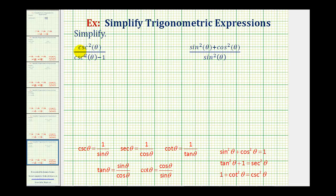Looking at this first expression, we have cosecant squared theta divided by the quantity cosecant squared theta minus one. We should be looking at this identity here. Notice the numerator is cosecant squared theta, which means we could substitute one plus cotangent squared theta for cosecant squared theta. But that would give us a sum in the numerator and a difference in the denominator, which should be even more involved to simplify. So let's take a look at our denominator — cosecant squared theta minus one. Notice if we subtracted one on both sides, we would have cotangent squared theta equals cosecant squared theta minus one, so we can substitute cotangent squared theta for our denominator.